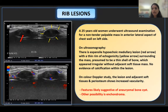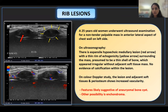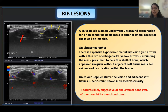In this case, a 25-year-old woman underwent ultrasound examination for a non-tender chest wall mass in the anterolateral aspect of the chest wall on the left side. On ultrasonography, there is an expansile hypoechoic medullary lesion indicated by the red arrow with a thin rim of echogenicity indicated by the yellow arrow surrounding the mass, presumed to be a thin shell of bone appearing irregular without adjacent soft tissue mass. No calcification is seen within the lesion, and the color Doppler study shows increased vascularity in the adjacent soft tissue and periosteum — features likely suggestive of an aneurysmal bone cyst, with enchondroma as another possibility. MRI was suggested for further evaluation but follow-up was lost.